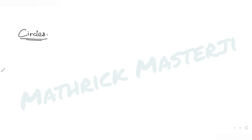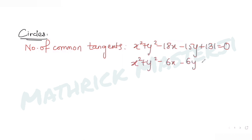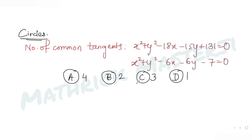Hi guys, I hope you are all doing well. Today's question is from the topic of circles. The question tells us to find the number of common tangents to two circles. The answer choices given are 4, 2, 3, and 1. We need to figure out how many common tangents are present to these two circles.